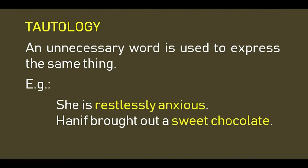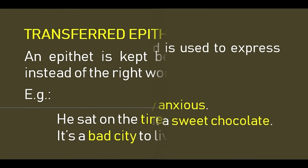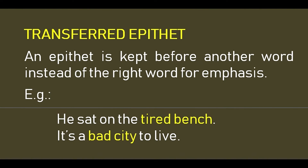Tautology: an unnecessary word is used to express the same thing — there is no use of that extra word, but it is used for emphasis. For example, 'she is restlessly anxious' — when a person is anxious, he is already restless, so there is no need to use the word 'restlessly.' Another example: 'honey brought out a sweet chocolate' — all chocolates are sweet, so there is no need to use the word 'sweet'.